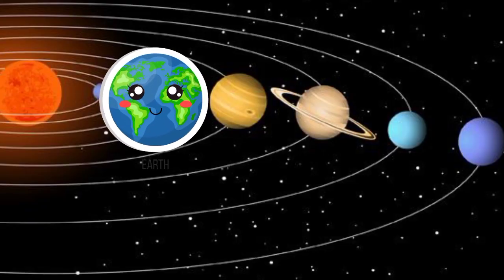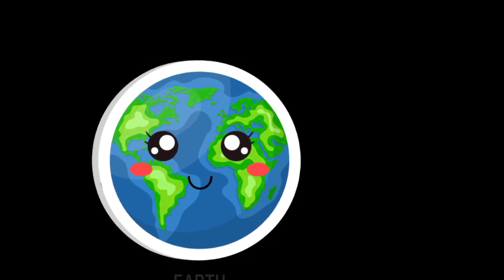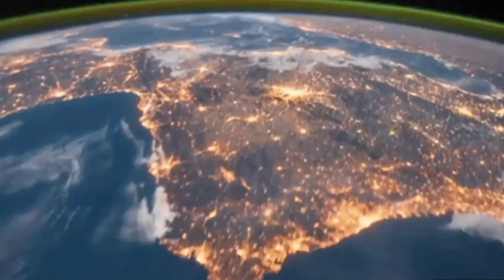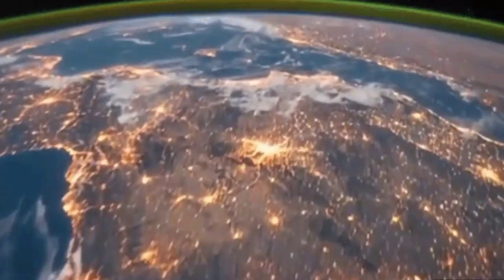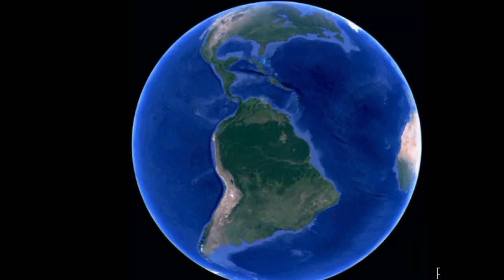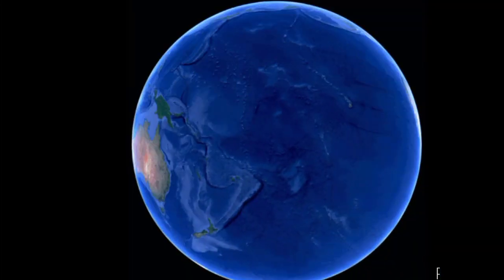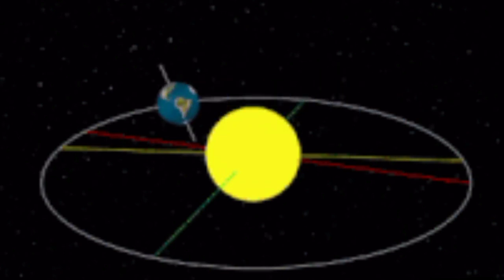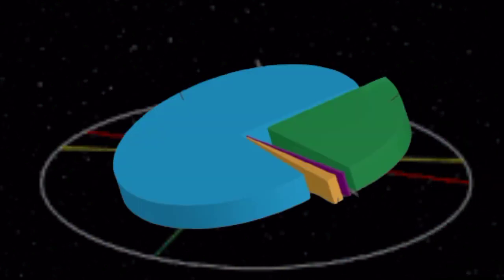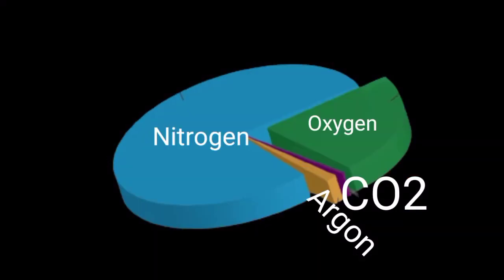It is the only planet we have found that contains life. Earth's surface is mainly water. Earth rotates at around 1,000 miles an hour. Earth's atmosphere is made of gases. Earth is not perfectly round.